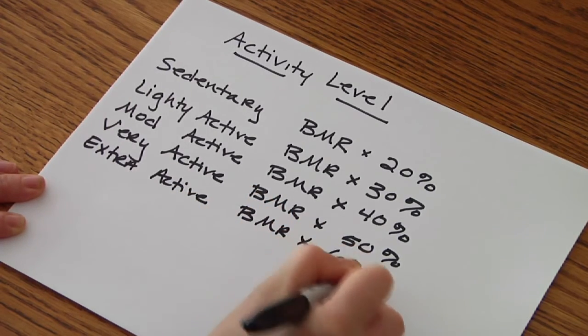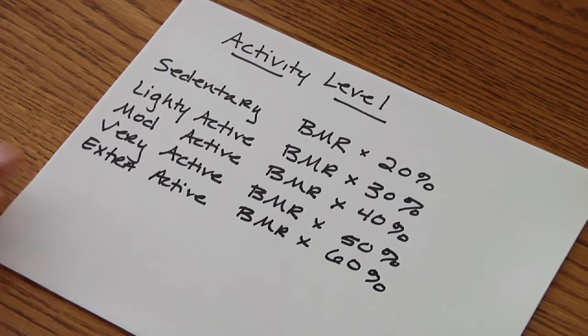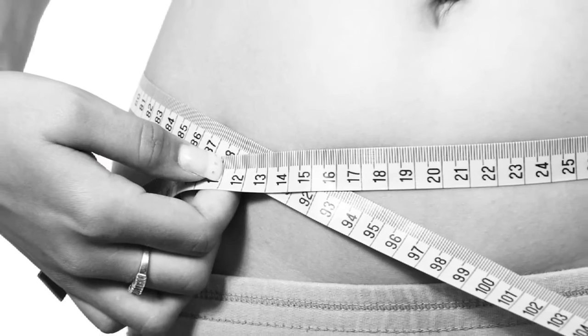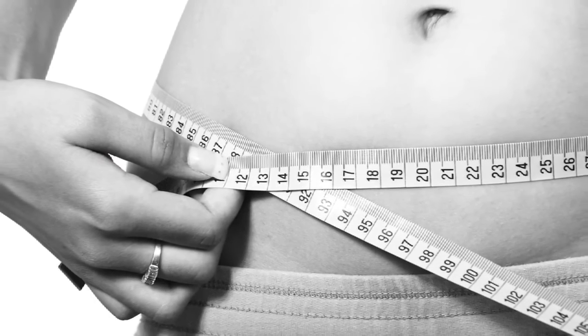Then you take this calculated activity level number and you add that to your actual BMR and that gives you the amount of calories that you need per day. And that's how you will calculate your daily caloric need.